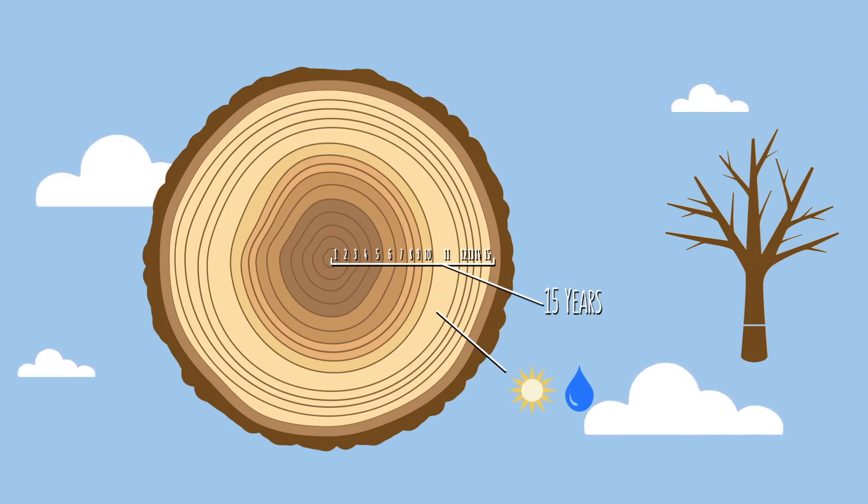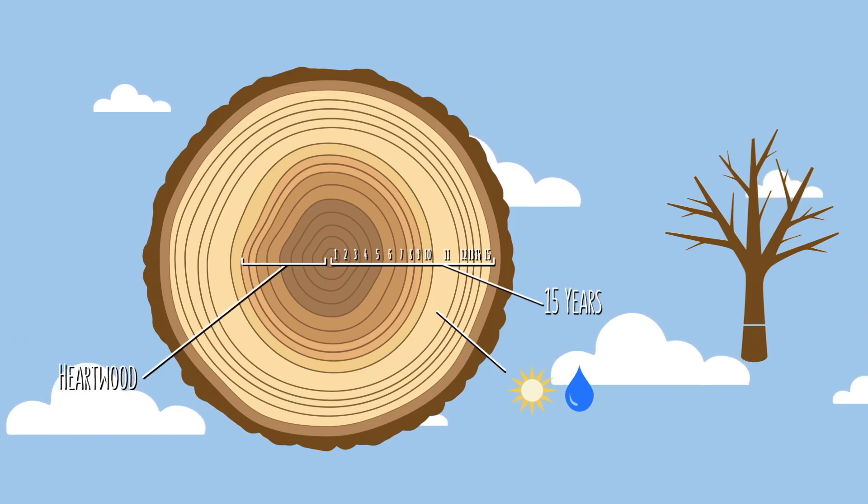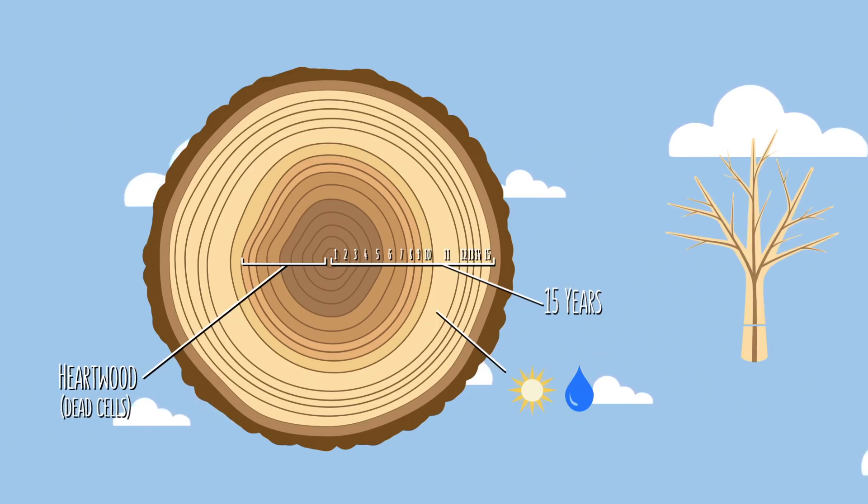But you'll also notice that the rings on the inside of the tree tend to be quite a bit darker than those on the outside. And that's because as the tree grows older, the cells that make up the earliest rings actually die. And when they do, chemicals are released that make them stronger, but also change their color. This is called the heartwood. And don't worry about the fact that it's technically dead. This is a normal, healthy part of a tree's growth and stability. Think of it almost like the tree's skeleton.